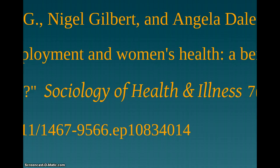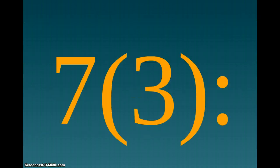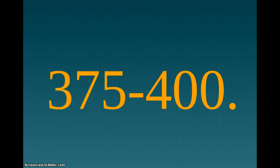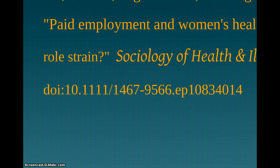After the article title, include the journal title. Note that the journal title has been italicized. After the journal title, include the volume and issue number of the journal. Note that the issue number is included within parentheses and followed by a colon. Next, include the page range that the article appears on and follow it with a period. Finally, include the entire DOI number.